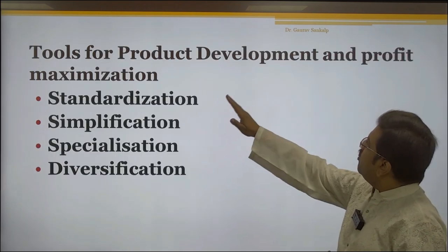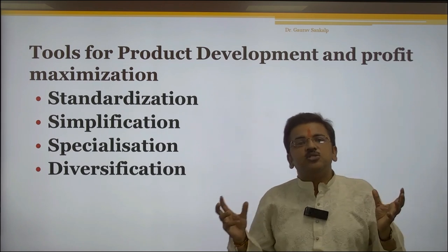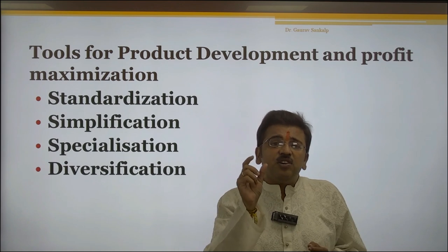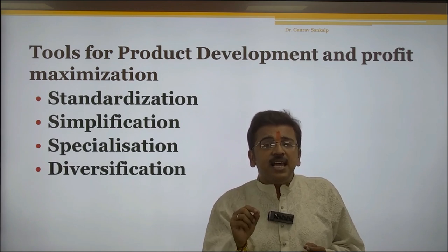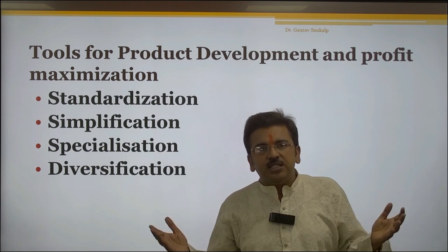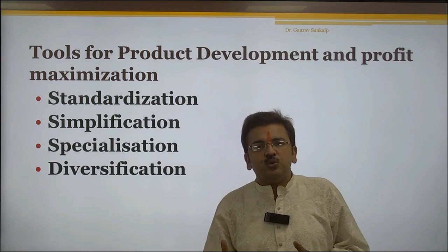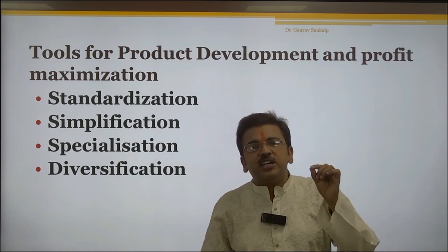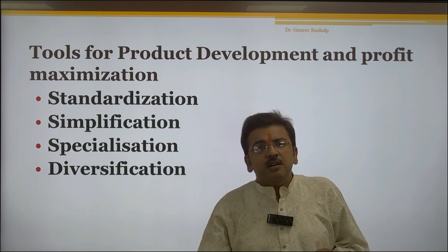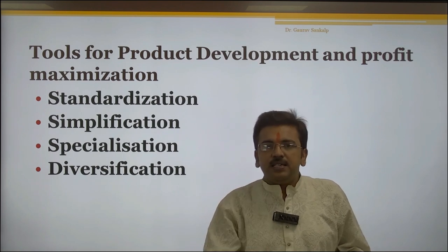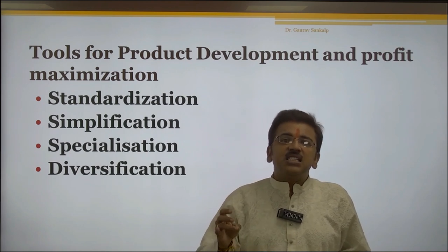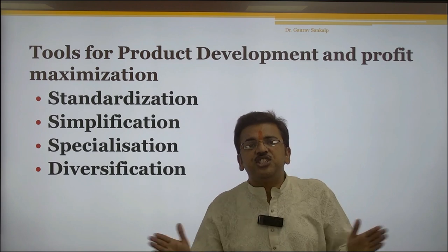Now let's explore the tools for product development and profit maximization. The profit depends upon the product, which is one of the most important things a customer directly sees and is attracted toward. There are four qualities on which a product is being bought by the customer: first, it must be standardized; second, it must have a simplified process; third, it must perform some specialized function; and fourth, there must be scope for diversification.